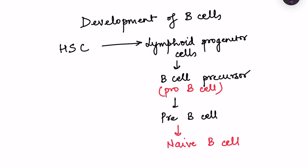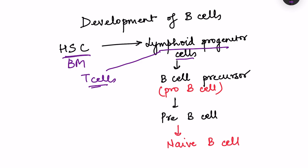B cells develop in the bone marrow from hematopoietic stem cells. This pluripotent stem cell can produce different kinds of WBCs, red blood cells, and platelets. On differentiation it produces lymphoid progenitor cells, which can form either T cells or B cells. The T cell precursor moves to the thymus, but the B cell precursor remains in the bone marrow — so B cell development takes place in the bone marrow itself, a process known as pre-processing.